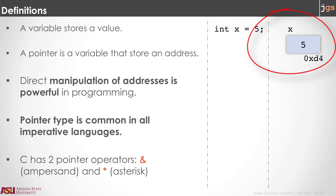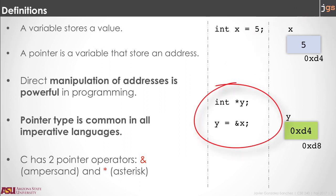Inside the variable you can store a value. So you have the address, the name, and inside the value. You already know that. A pointer is a variable, but it's a particular type of variable. It's a variable that is used to store an address instead of a value.